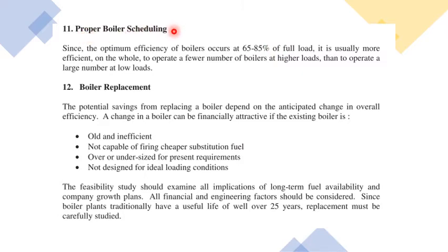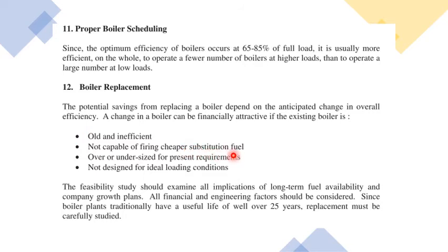The twelfth point is boiler replacement. If a boiler is old and inefficient, not capable of firing cheaper substitute fuels, oversized or undersized, or not designed for ideal loading conditions, it may need to be replaced. Over the years, plant loads change and older boilers may not handle new fuel types. Replacing an old boiler can improve efficiency and lead to better energy conservation.